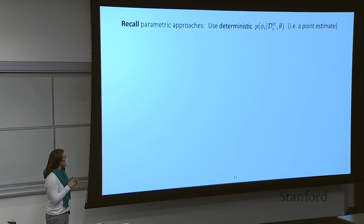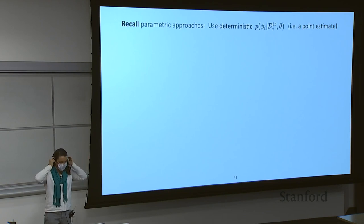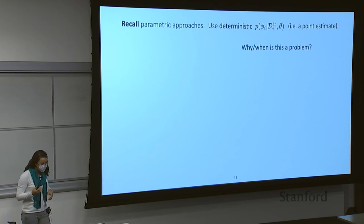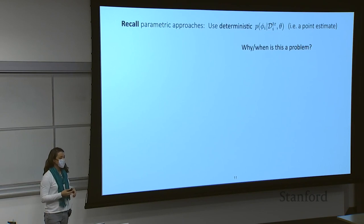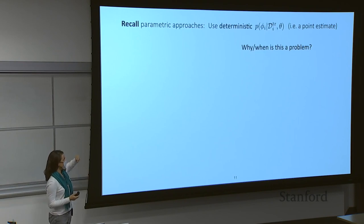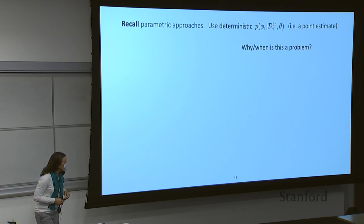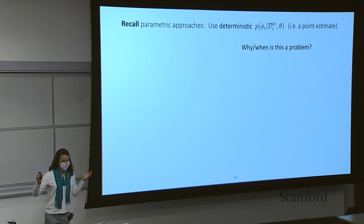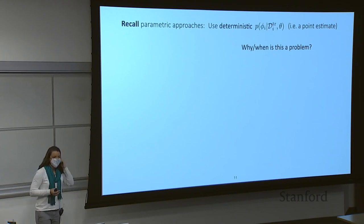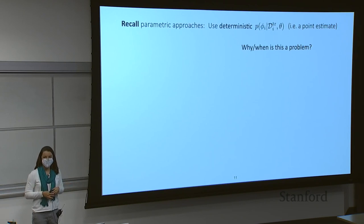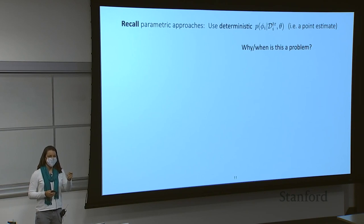That's the high-level structure of the Bayesian perspective on meta-learning within these Bayesian graphical models. A lot of the algorithms we've talked about so far are going to give you a single set of task-specific parameters — essentially a point estimate of this distribution. In many cases this might be fine, as in your homework where you've been inferring parameters and getting reasonable accuracy. But in what cases might it be a problem to only recover a single parameter?